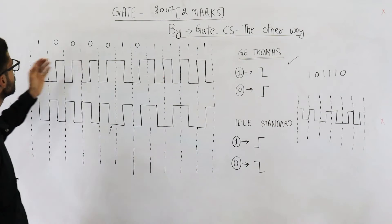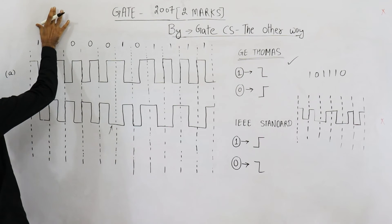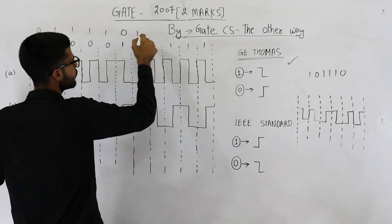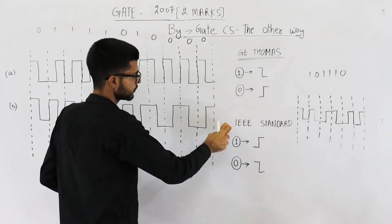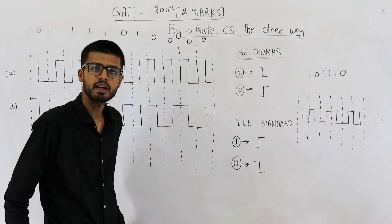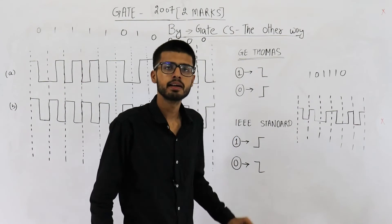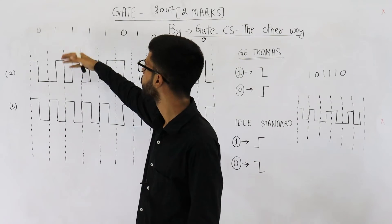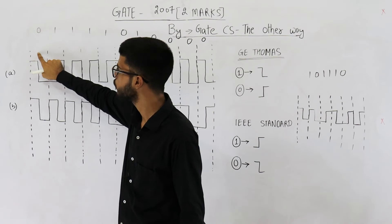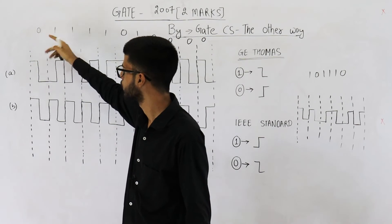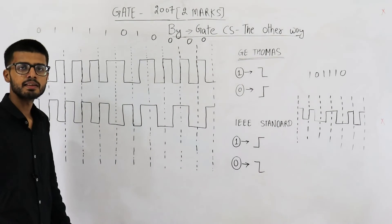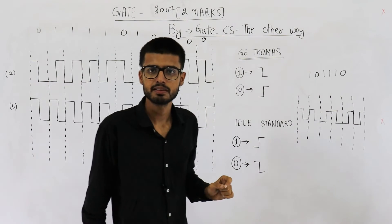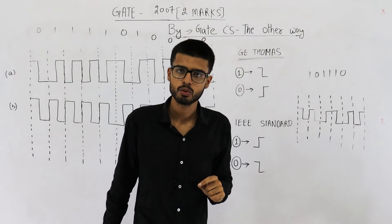In the IEEE standard, the pattern is reversed: 1 becomes 0 and 0 becomes 1. So each bit we found is complemented. According to the IEEE standard, the answer is completely opposite to what we got with the GE Thomas standard — every bit has been complemented. Now let us see what encoding scheme could be applied to this complemented bit pattern to generate waveform B.